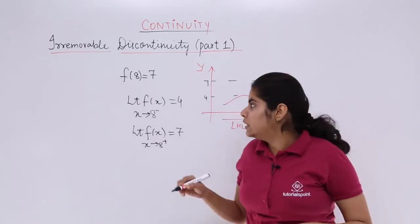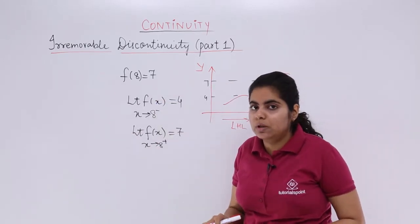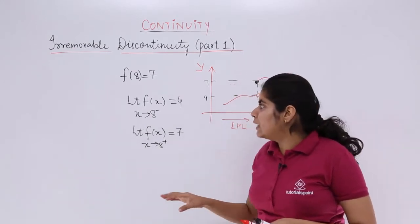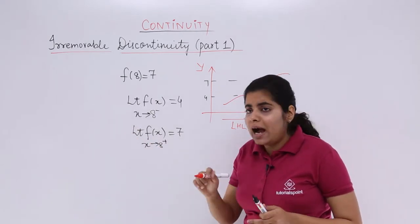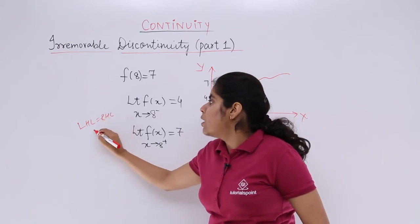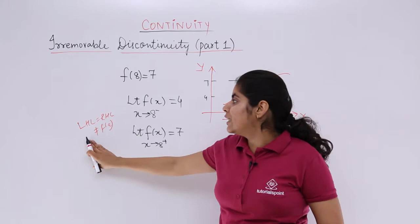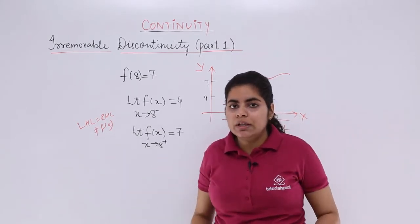Now both of these are 7. What should be equal? The condition should be all these 3 should be equal actually. But what is happening is the limits are itself not equal. Had it been LHL equal to RHL, but not equal to the value of the function, this kind of discontinuity we studied in the previous video was called as removable. We were able to remove it.